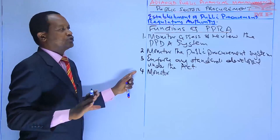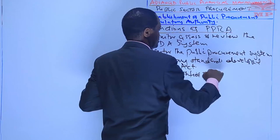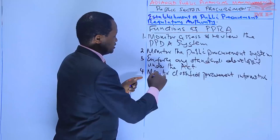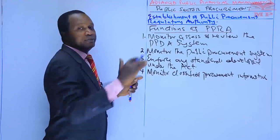Function four is to monitor classified procurement information, including that of specific items of security organs, and then make recommendations to the Cabinet Secretary.